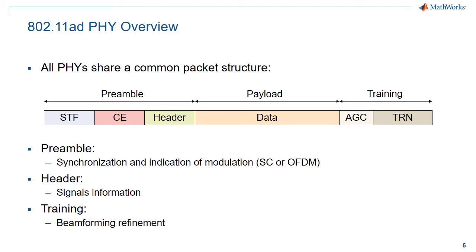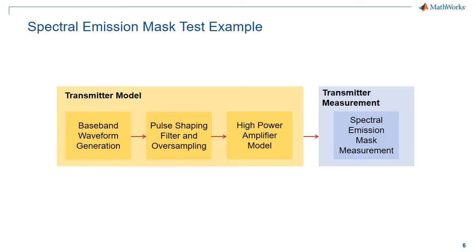The preamble is used for synchronization. The header contains information required to decode the payload. Optional AGC and training fields are appended to the packet for refining beamforming vectors.